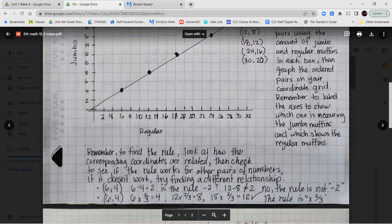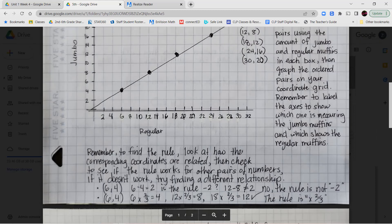So if I'm looking at my first ordered pair, six, four, I can say well six minus four is two. So maybe the rule is minus two. There's two fewer jumbo muffins than regular muffins in each box. But if I try to extend it to my next ordered pair, 12 minus eight is not equal to two. So that's not going to be my rule. It doesn't work. So I have to find something else.